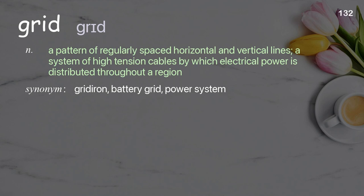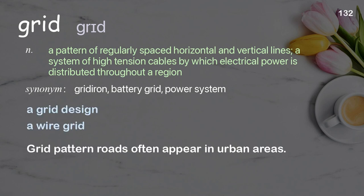Grid: a pattern of regularly spaced horizontal and vertical lines; a system of high-tension cables by which electrical power is distributed throughout a region. Examples: A grid design. A wire grid. Grid pattern roads often appear in urban areas.